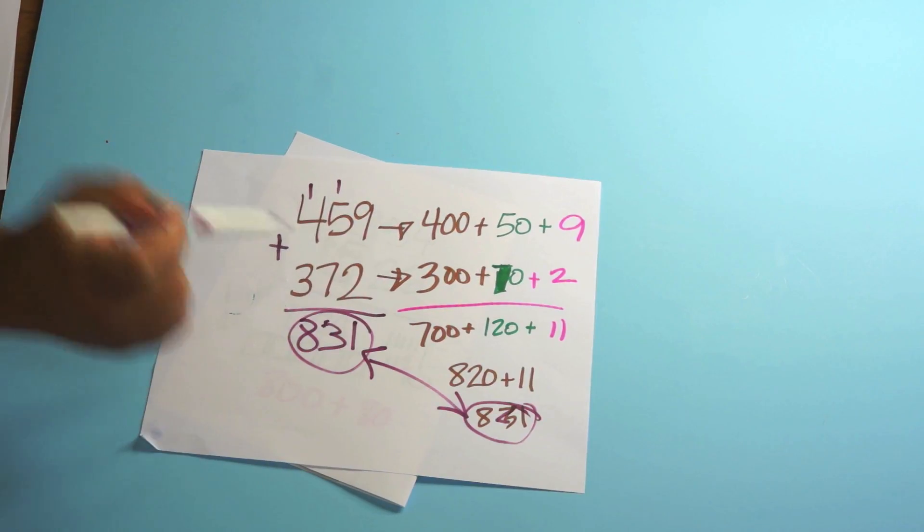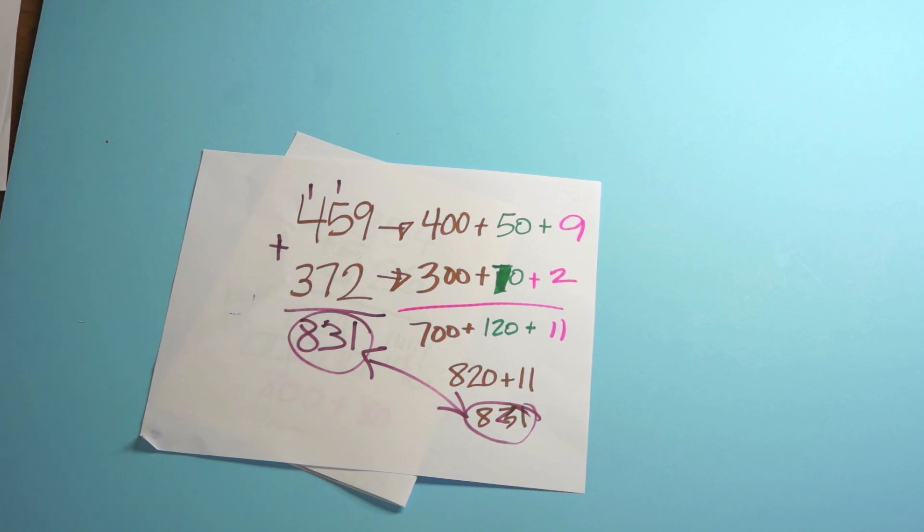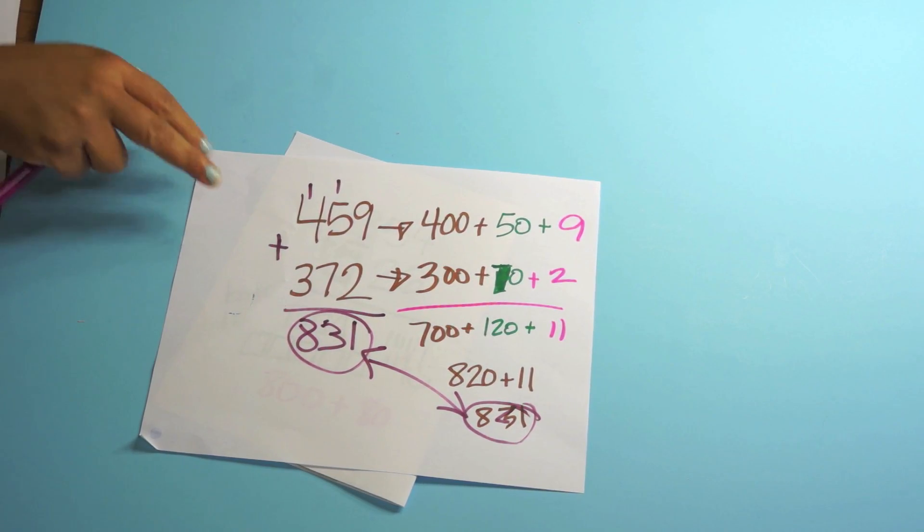And then you always want kids to solve in one way and check in another. So then they would come over here and they would check with paper and pencil and make sure that what they got here matches what they got there. They did it partial sums and then they did it paper and pencil. In the common core, they call it general method.